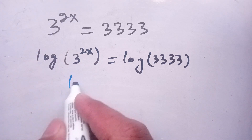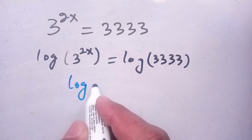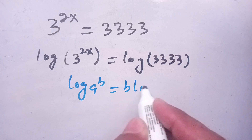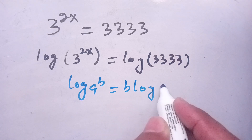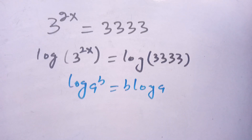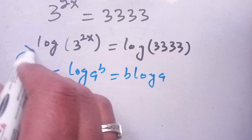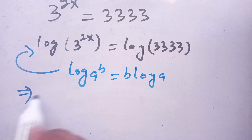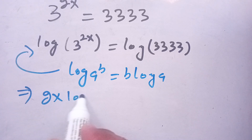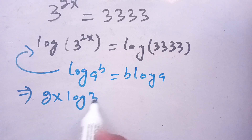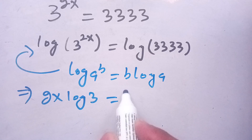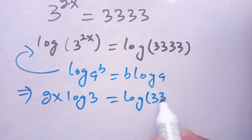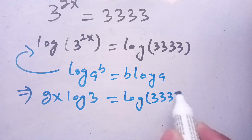In the next step, we take the logarithm on both sides. We know that log of a power b is equal to b times log of a. Using this identity on the left hand side, we get 2x times log of 3 is equal to log of 3333.